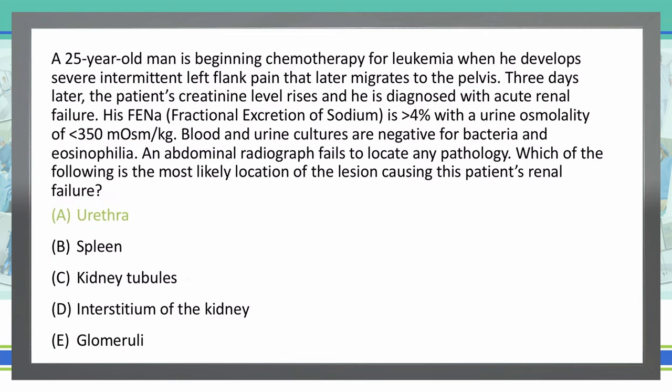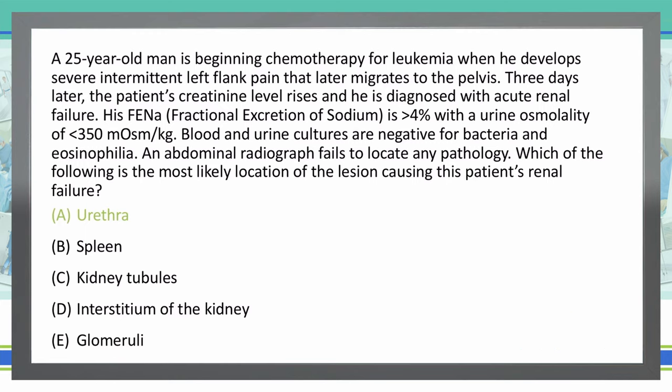That is correct. The urethra is the location of what's causing this patient's renal failure. What we're seeing here is tumor lysis syndrome — these leukemia cells are being lysed and all of their contents, which includes potassium, uric acid, phosphate, and other chemicals and compounds, are being released into the body. The kidneys are filtering those out and dumping them into the urine. Specifically, uric acid is going to be so concentrated that it will actually form kidney stones within the pelvis of the kidney.